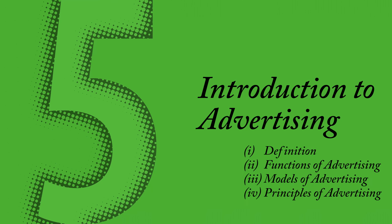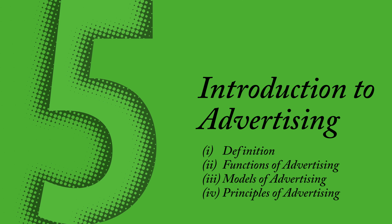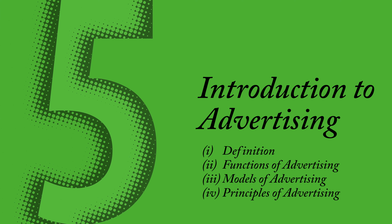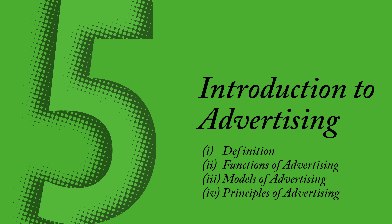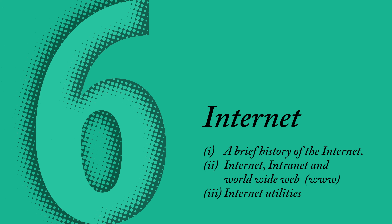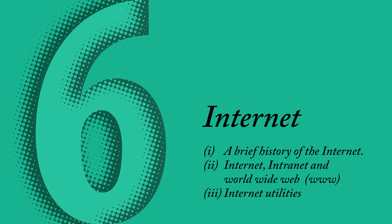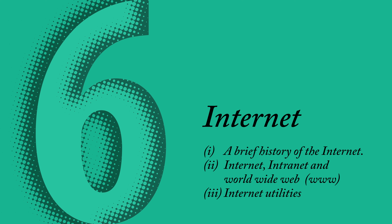Chapter 5 is all about advertising — its functions, models, principles and insights of this creative field. Chapter 6 is the most attractive one: internet. This chapter can be better taught by students rather than teachers. It covers social media, gaming, digital marketing and other utilities of the internet.